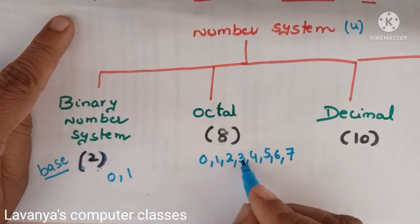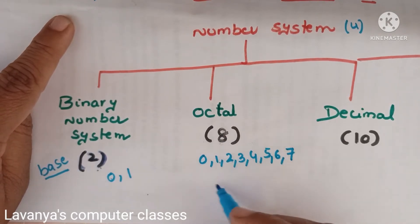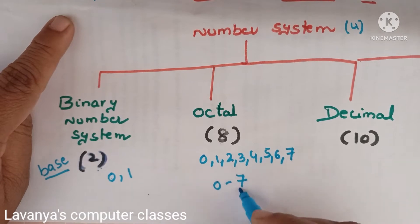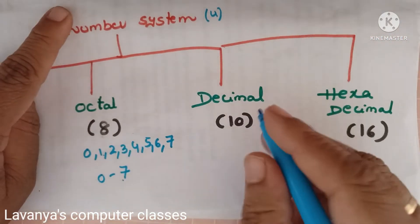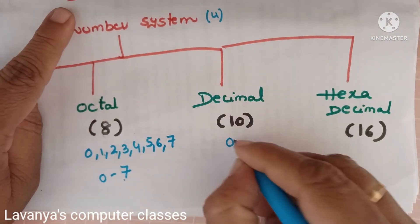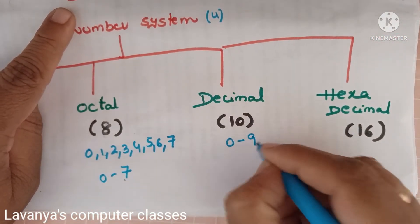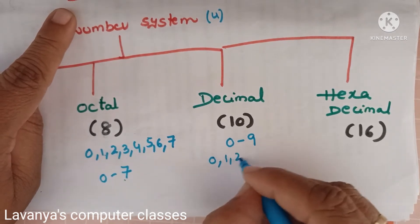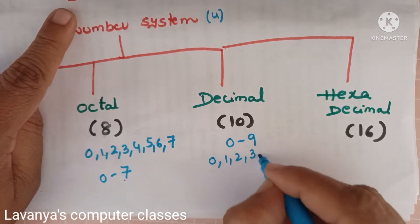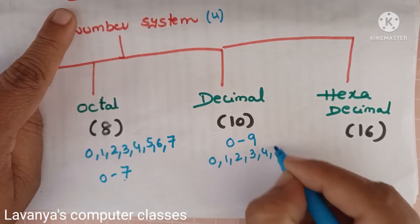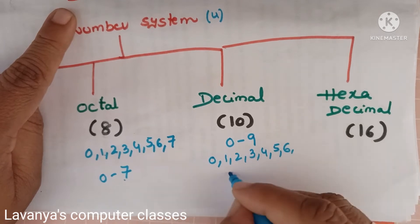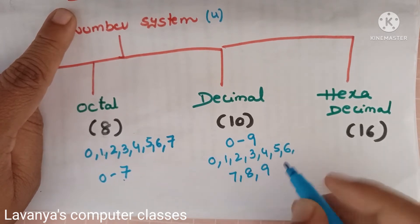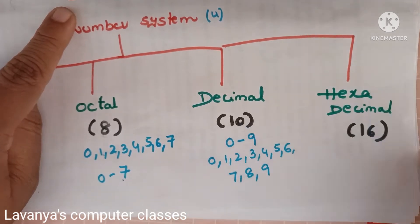Octal means base is 8. It contains 8 values, and its range is 0 to 7. Decimal base is 10, and its values are 0 to 9 — that is 0, 1, 2, 3, 4, 5, 6, 7, 8, 9 — totally 10 values. That is why it is known as the decimal number system.